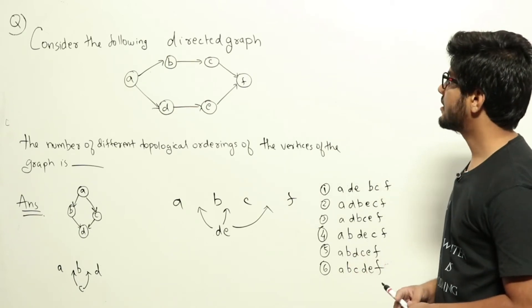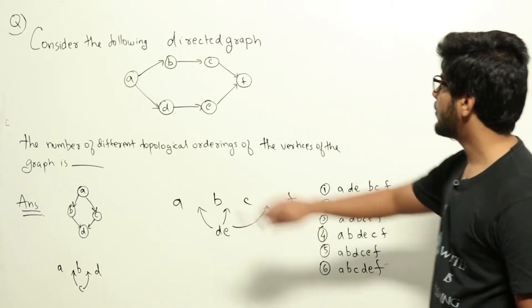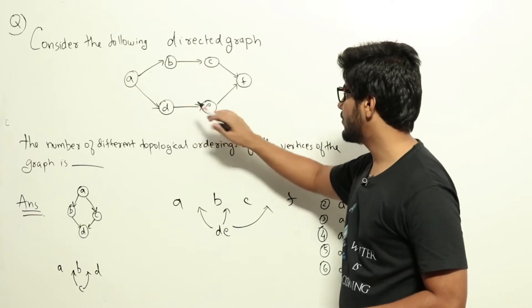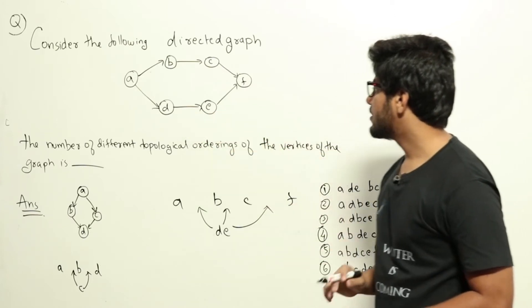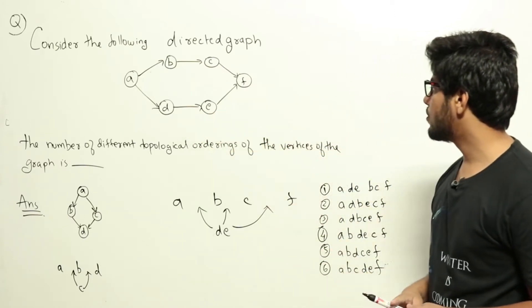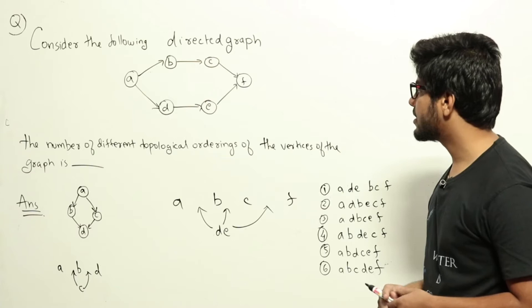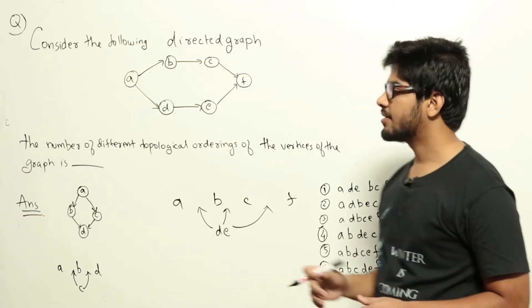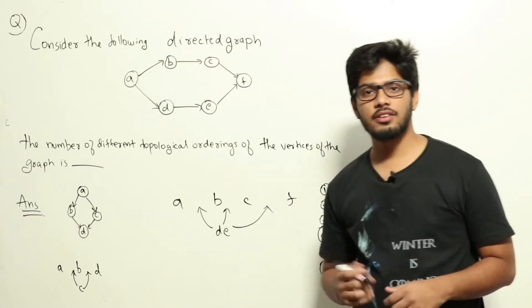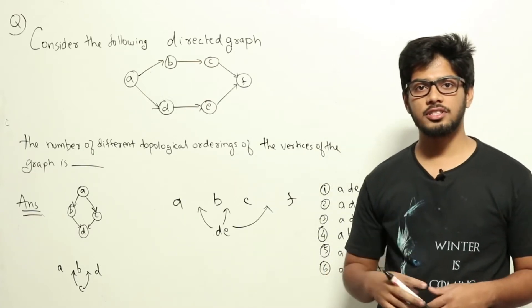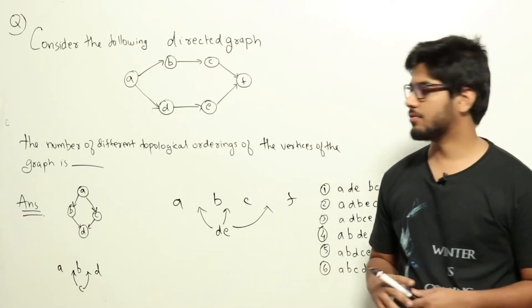Consider the following directed graph: A, B, C, F, D, E given here. The number of different topological orderings of the vertices of the graph is blank. This is a question from data structures regarding topological ordering of a graph.